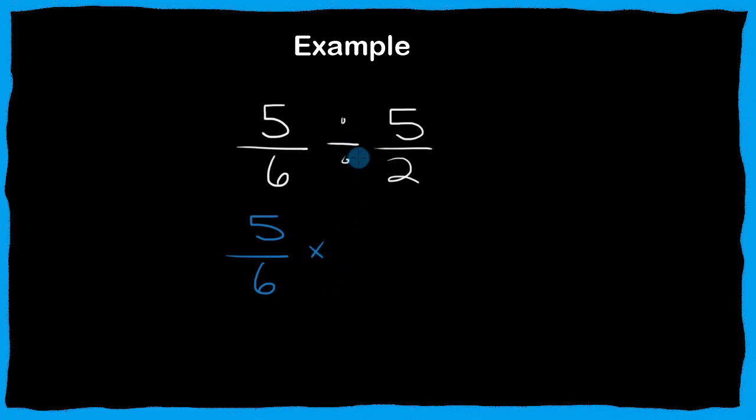is to switch this to a multiplication problem, and we're going to take the reciprocal of the second fraction, so we're going to multiply five-sixths times two-fifths, and now we can reduce before we multiply,